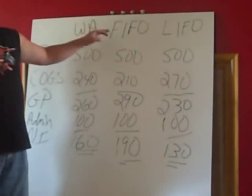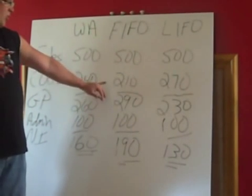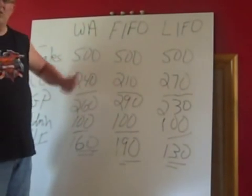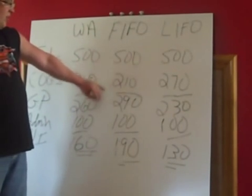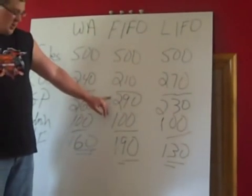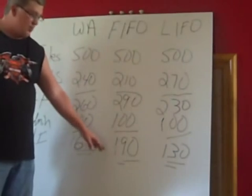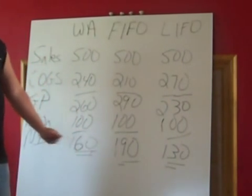For first in, first out, our cost of goods sold was $210. This is the only number that's changing. So we have a gross profit of $290, and our bottom line net income becomes $190.